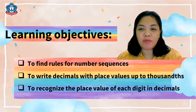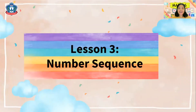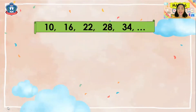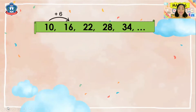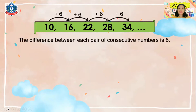Let's start with Lesson 3 about number sequences. A number sequence is a list of numbers that are connected by a certain rule. For example, we have the sequence: 10, 16, 22, 28, and 34. From 10 to 16 the difference is 6, so we add 6. We get 16, then another 6 gives 22, another 6 gives 28, and another 6 gives 34. The difference between each pair of consecutive numbers is 6.